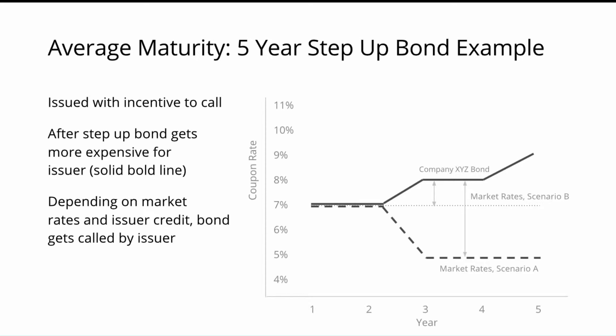That incentive might be either due to a lower interest rate environment or due to lower refinancing costs from an improved credit of the company itself. Scenario C is actually the only scenario where calling the bond isn't sensible after year three, or especially after year five when the coupon rate has increased even further. To summarize: although bonds are usually issued with no maturity or very long-term maturity, due to the fact that the bond could be called, the market treats the bond as if the maturity were at that call date.